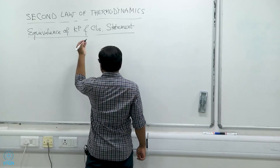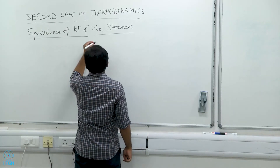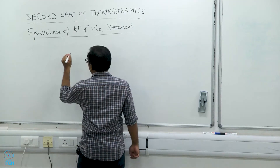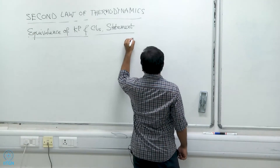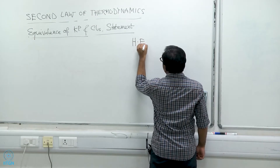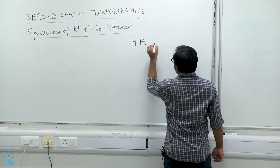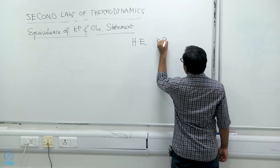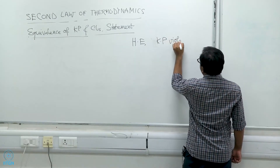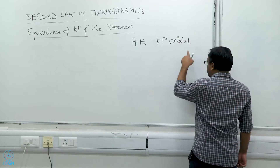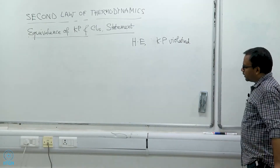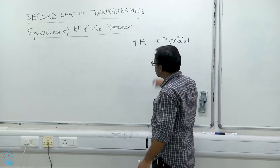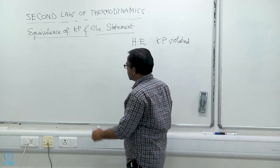Let us say that you have a heat engine that violates the Kelvin-Planck statement — Kelvin-Planck statement violated — and we will show that this automatically leads to the violation of the Clausius statement.